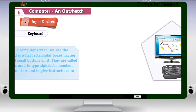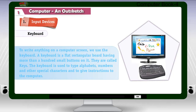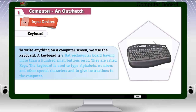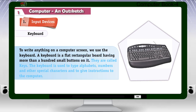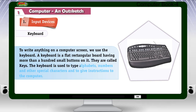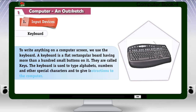Keyboard: To write anything on a computer screen, we use the keyboard. A keyboard is a flat rectangular board having more than a hundred small buttons on it, called keys. The keyboard is used to type alphabets, numbers, and other special characters, and to give instructions to the computer.